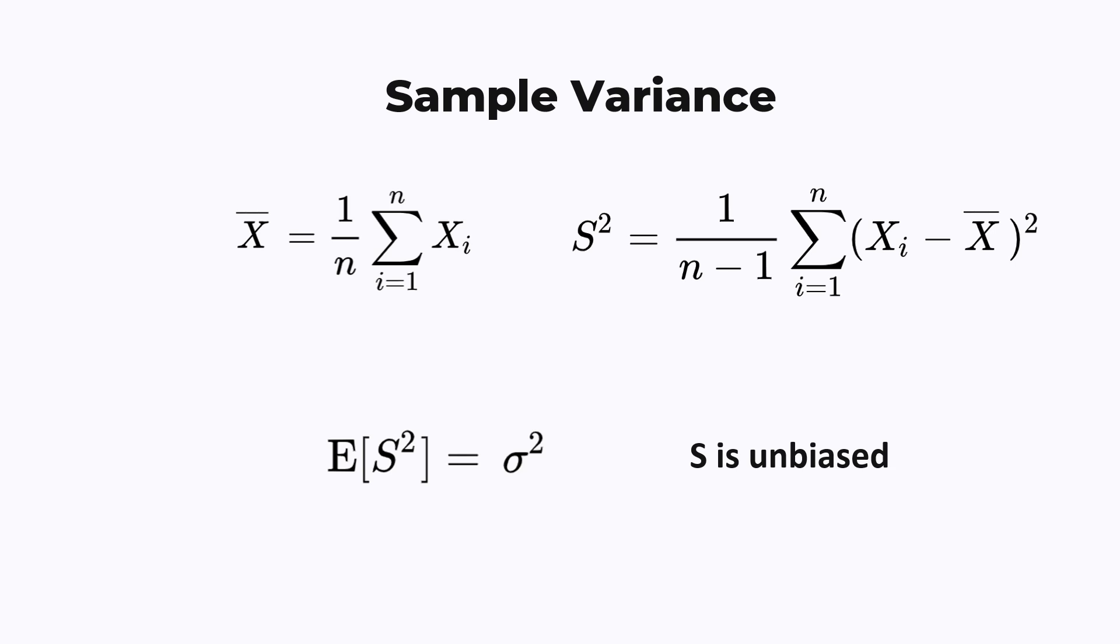This is a very common example of a biased estimator, but actually I think it's not a great example. Why? Because the bias is very easy to correct, by dividing by n-1 instead of n, so in practice you will always use the unbiased version of this estimator. But this is not generally the case, and if this is the only example you've seen of a biased estimator, you might get the wrong impression that the bias is always correctable in some way.